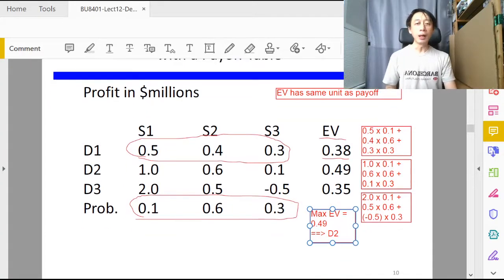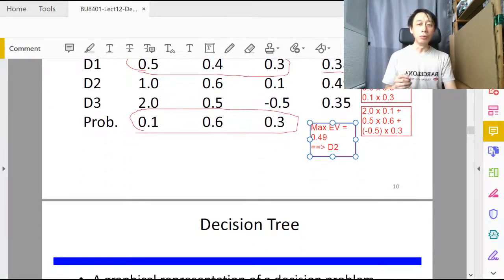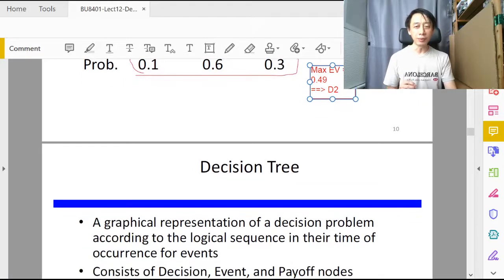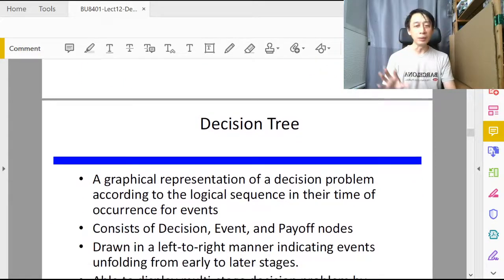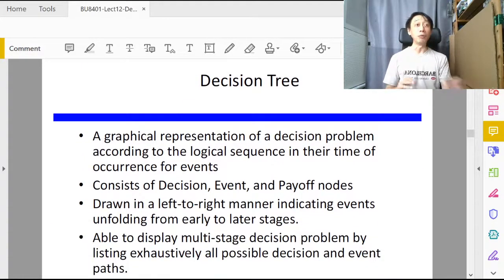Now it is possible to represent the payoffs and the various decision-making process using a more graphical way to describe them, and that's called the decision tree. Decision tree offers us a more graphical way and a more chronologically oriented manner, because the more to the left of the decision tree, the earlier will be the decision-making time position or event.